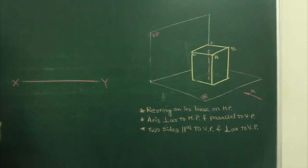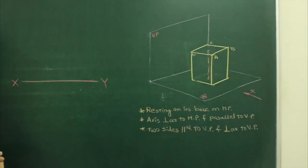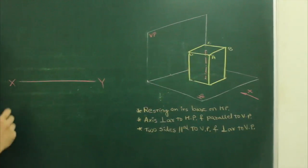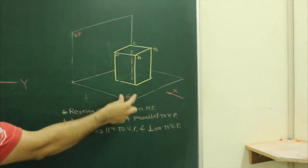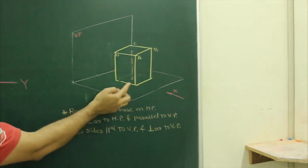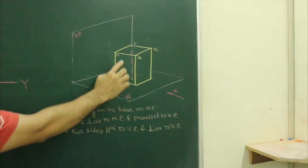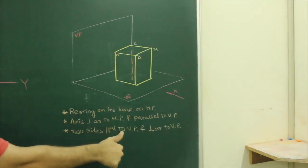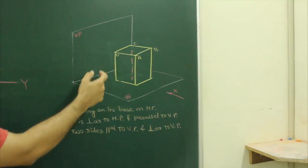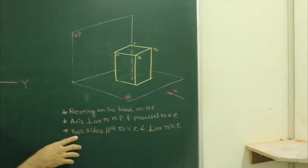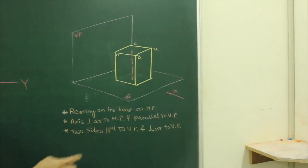In this problem, a square prism is resting on its base on the horizontal plane with its axis perpendicular to HP and parallel to VP. See this diagram — this is a square prism resting on its square base on the horizontal plane. The axis is perpendicular to HP and parallel to VP. There are two sides parallel to VP and two sides perpendicular to VP.